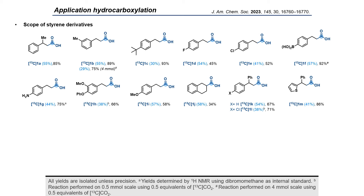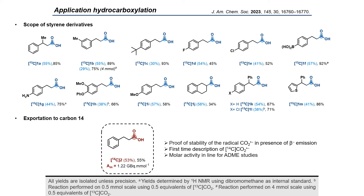Afterwards, we explored the substrate tolerance and we were quite pleased to obtain good yields, but more especially with great isotopic enrichments. The conditions were applicable to substrates bearing sensitive functional groups such as primary amines, boronic acids, or aryl chlorides. However, on this kind of substrate, the substitution of the alkene part was not very well tolerated, paving the way to a systematic loss in yield.